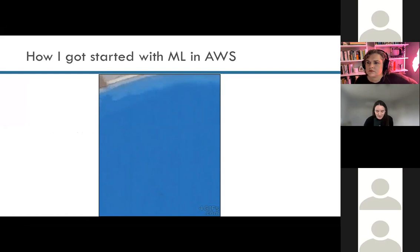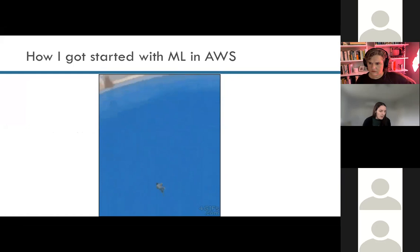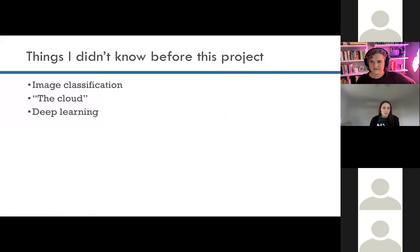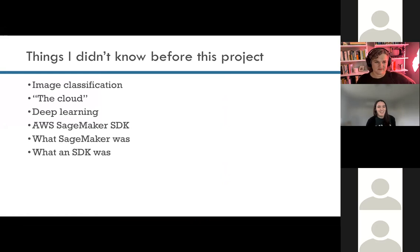How I got started in AWS was basically diving straight into the deep end. My company had a use case — we thought we could use image classification — but none of us had ever really done that at that scale. We hadn't used AWS SageMaker. I was half asked to step up and say, hey, are you interested in learning this? There were a lot of things I didn't know before doing this project, which started about January this year — things like image classification, what the cloud was, deep learning, the AWS SageMaker SDK, what SageMaker was, what an SDK was, and of course whether I'd accidentally rack up a huge bill and get fired.